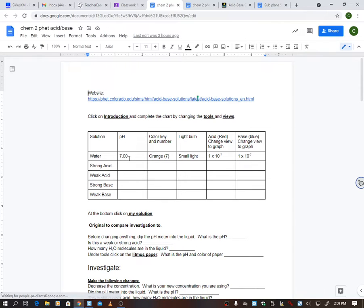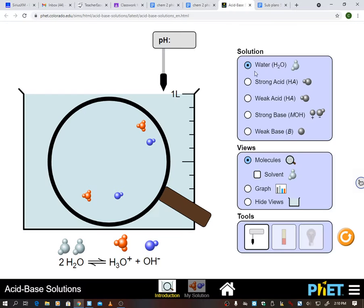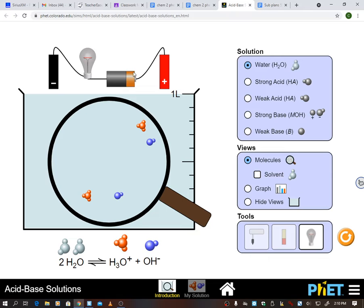So I went ahead and I did water for you. I put the pH meter down, got 7. I did the color key and number. It was orange, which was about a 7. I did the light bulb for you. So I'm going to click on that in my tools. You just lower it down.